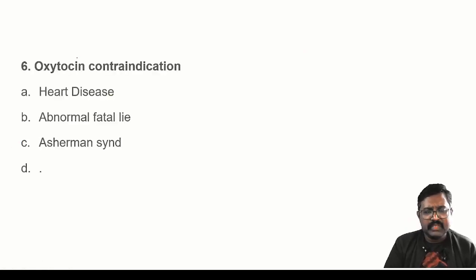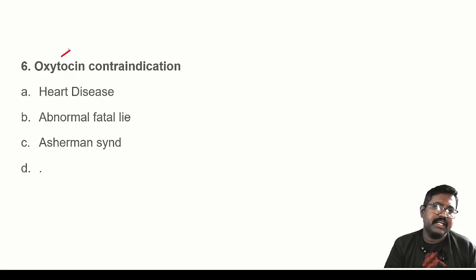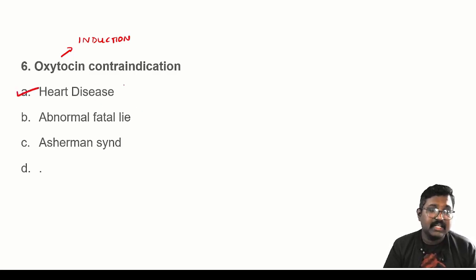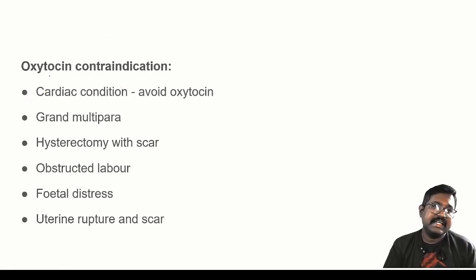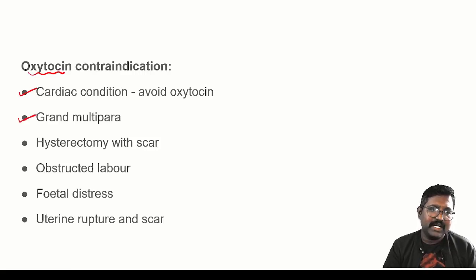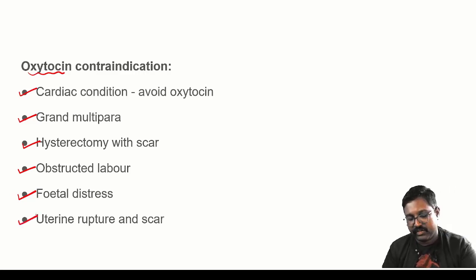Sixth question: oxytocin contraindications. Oxytocin is used for induction of labor, induction of abortion, and in uterine inertia. Contraindications include cardiac conditions, grand multipara, scar due to caesarean section, obstructed labor, existing fetal distress, and scar due to uterine rupture. Oxytocin is totally contraindicated if there is any heart disease.